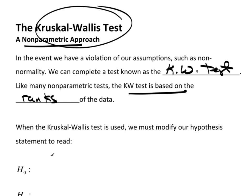Essentially, what the KW test does is it's a lot like the Wilcoxon rank sum. Remember, with the Wilcoxon rank sum we had two independent data groups. We put them together as if they're one big data set, but we remembered which group they came from. Then we ranked them, separated the ranks back out, and essentially did a two-sample T test using the ranks.